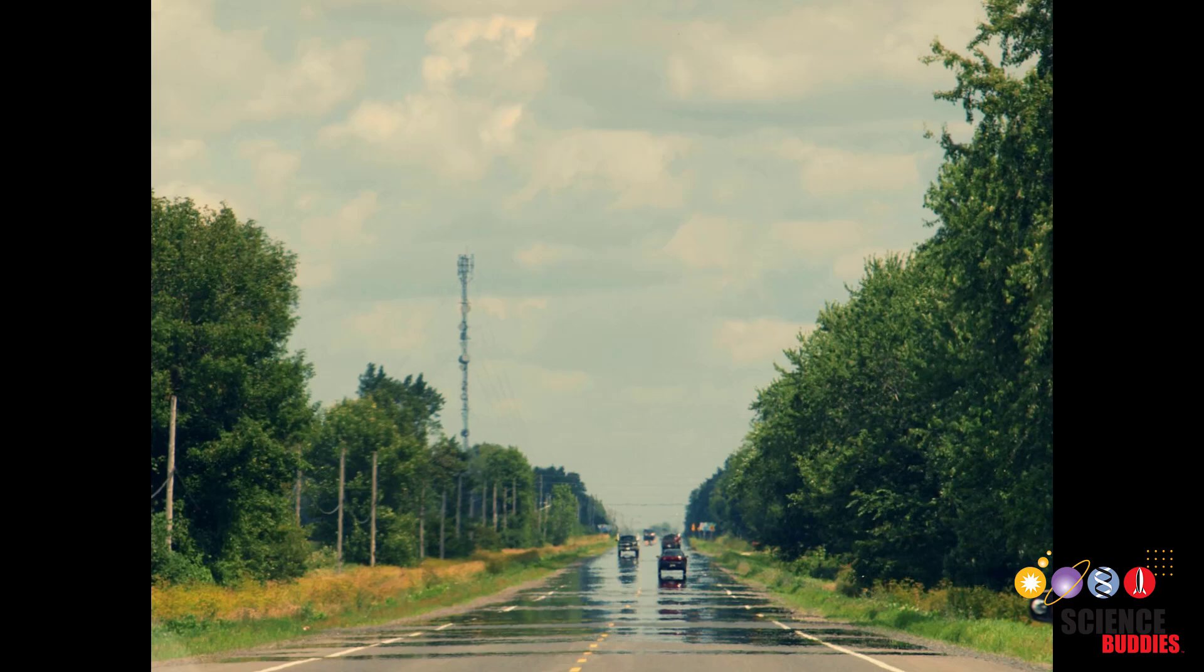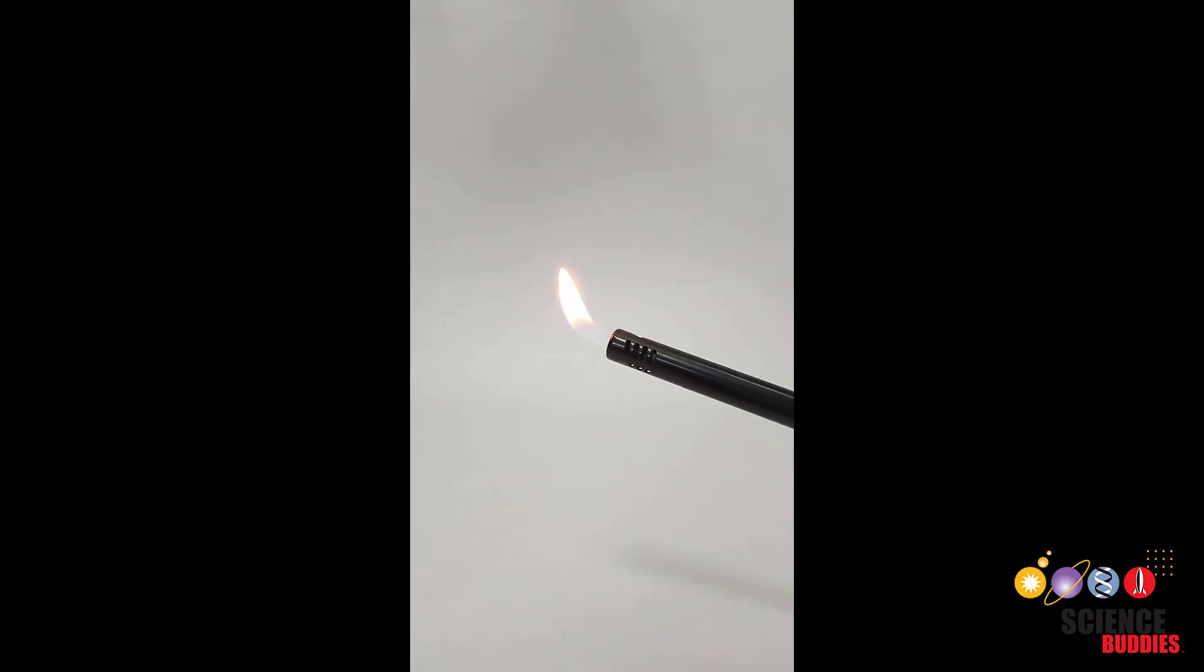This is why you can sometimes see a mirage over a road on a hot summer day. Under normal conditions, the human eye can't detect very small amounts of refraction from subtle changes in air density, which is why I can only see the flame here, but not the air moving around it.